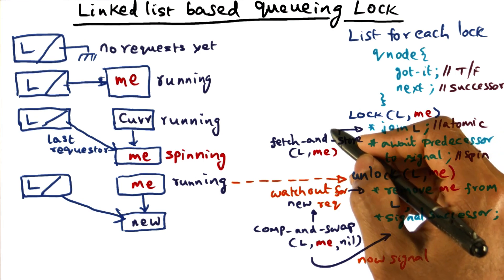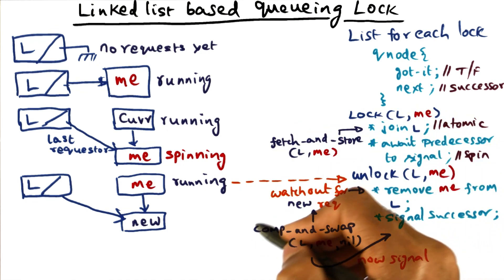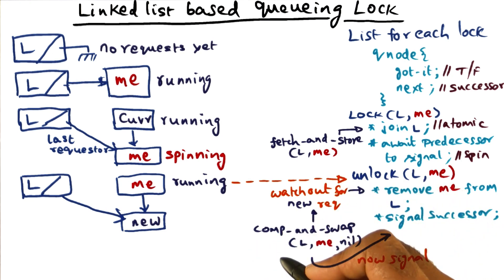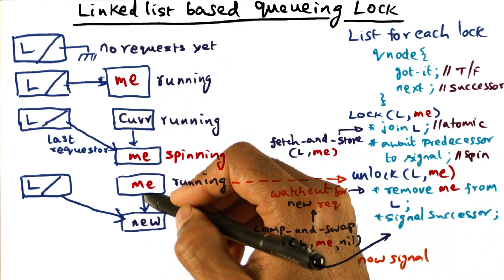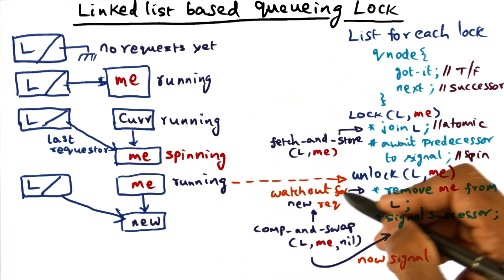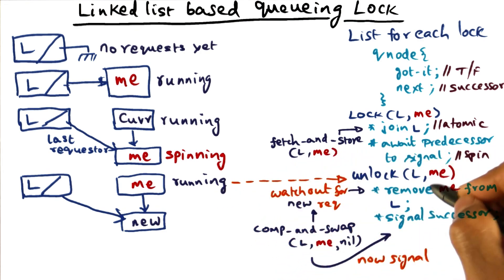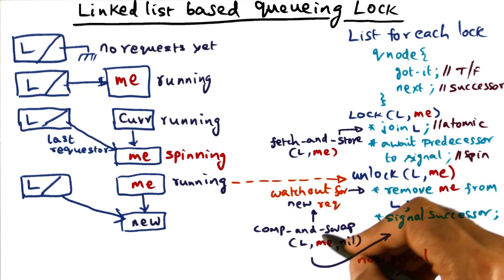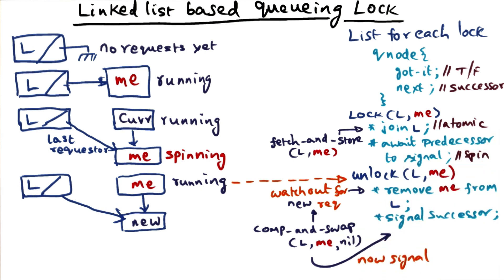Usually there's only one atomic operation per critical section. The only exception is this corner case — in order to handle it, you have to use a second atomic operation. But if the linked list has a number of requesters and I'm in the middle, I simply signal the successor; I don't have to do anything fancy in terms of compare-and-swap. So the second atomic operation is needed only for the corner case, not as a routine part of the unlock operation.